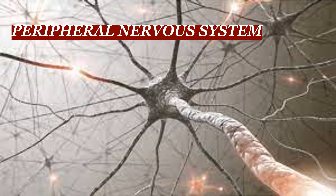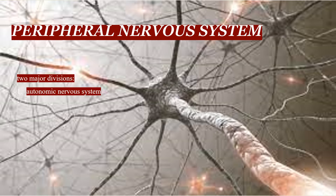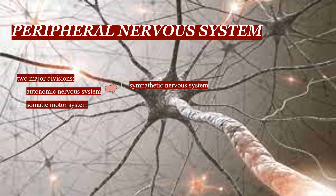The peripheral nervous system has two major divisions: the autonomic nervous system and the somatic motor system. The autonomic nervous system in turn has two major divisions: the sympathetic nervous system and the parasympathetic nervous system.